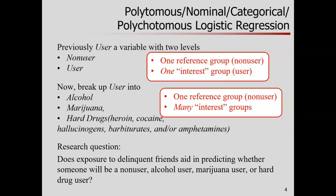In this dataset, we have alcohol, marijuana, or a whole bunch lumped together as hard drugs. In the dichotomous case, we had two groups: one is the reference group — say non-users — and one interest group, people who are classified as users.